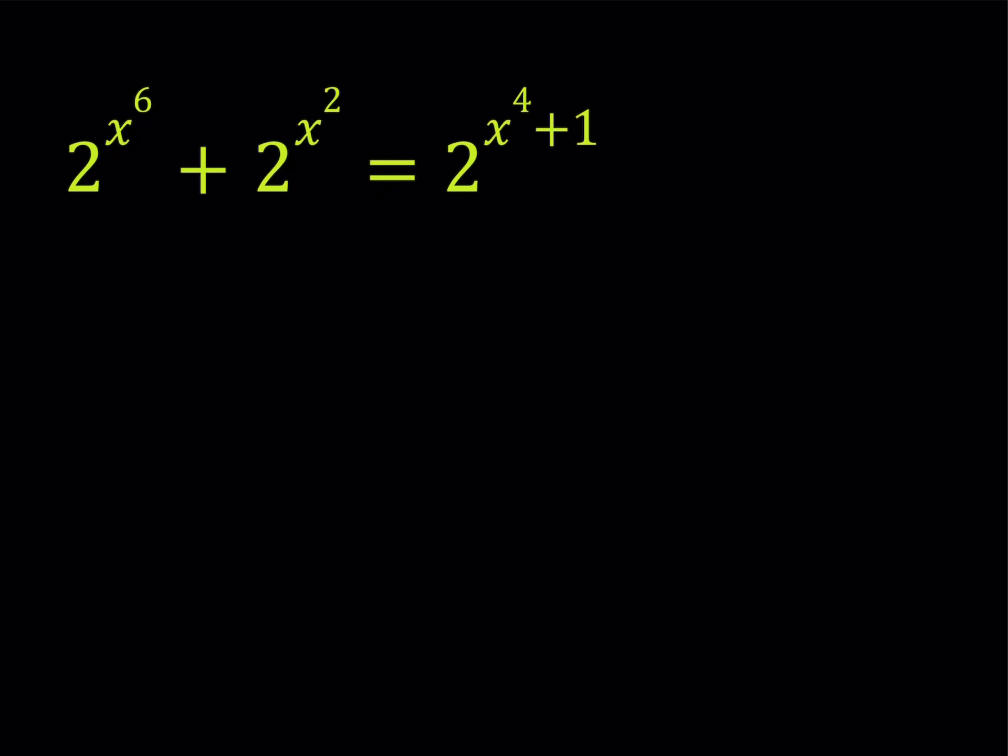We have 2 to the power x to the 6th plus 2 to the power x squared is equal to 2 to the power x to the 4th plus 1. And we're going to be looking for real x values.